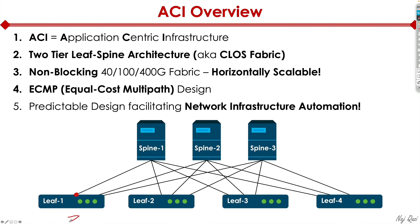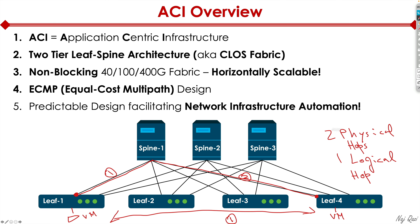Let's look at something really cool. If there's a VM on leaf 1 that wants to talk to a VM attached to leaf 4, leaf 1 would take a path up through a spine and down to leaf 4. It doesn't matter which path it takes — it will reach that virtual machine. This means each virtual machine is two physical hops away. However, logically we could be using VXLAN overlay technology, so these VMs think they're directly connected with each other. In reality they're two physical hops away, but logically they think they're just one hop away. That's the whole idea of underlay and overlay.